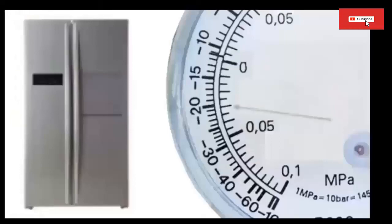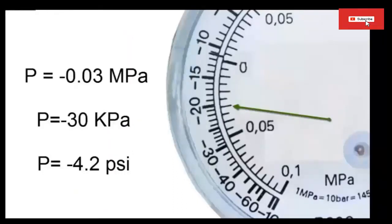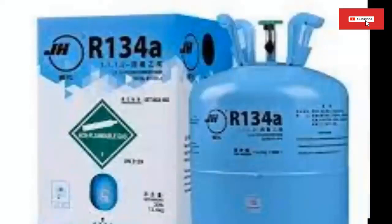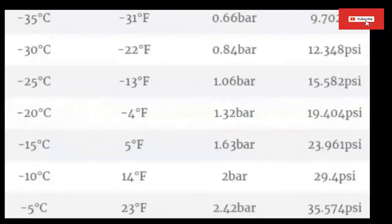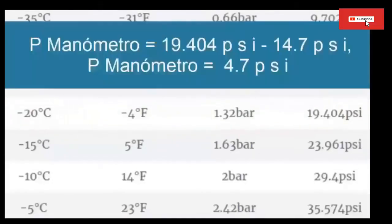For a low temperature of minus 20 degrees Celsius, typical of domestic refrigerators, we only have to wait for the needle to stop with the equipment turned on at the value of minus 20 degrees Celsius, thus obtaining the following value of pressure. Low pressure for freezers at minus 20 degrees Celsius: an absolute pressure of 19.404 psi. To know the pressure that the manometer would show, we subtract the atmospheric pressure: 19.404 psi minus 14.7 psi. This subtraction results in a manometer pressure value of 4.7 psi.